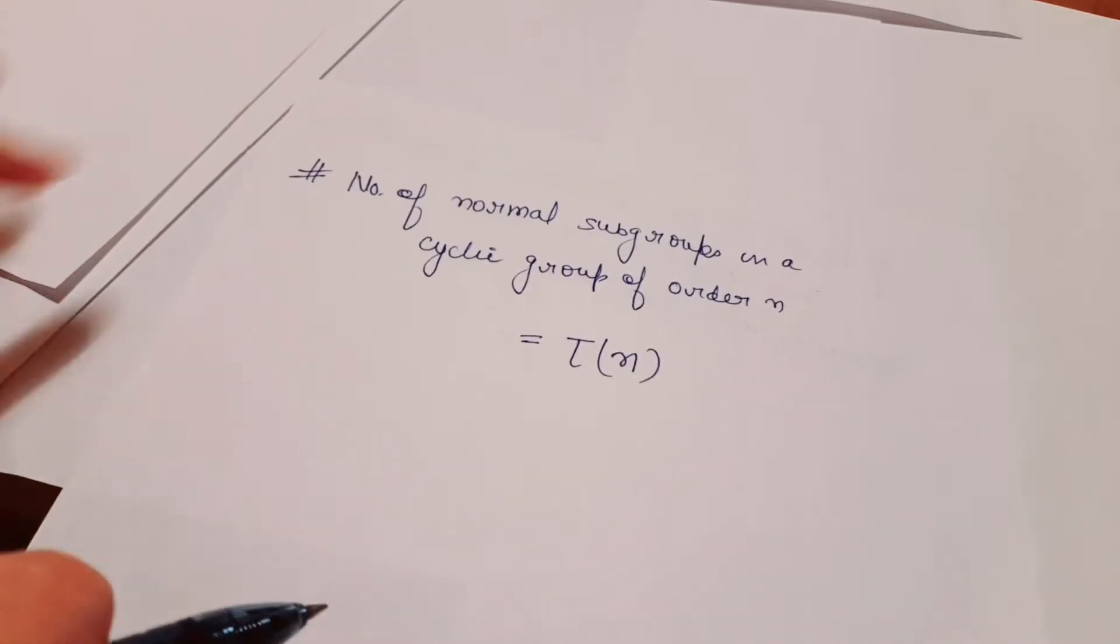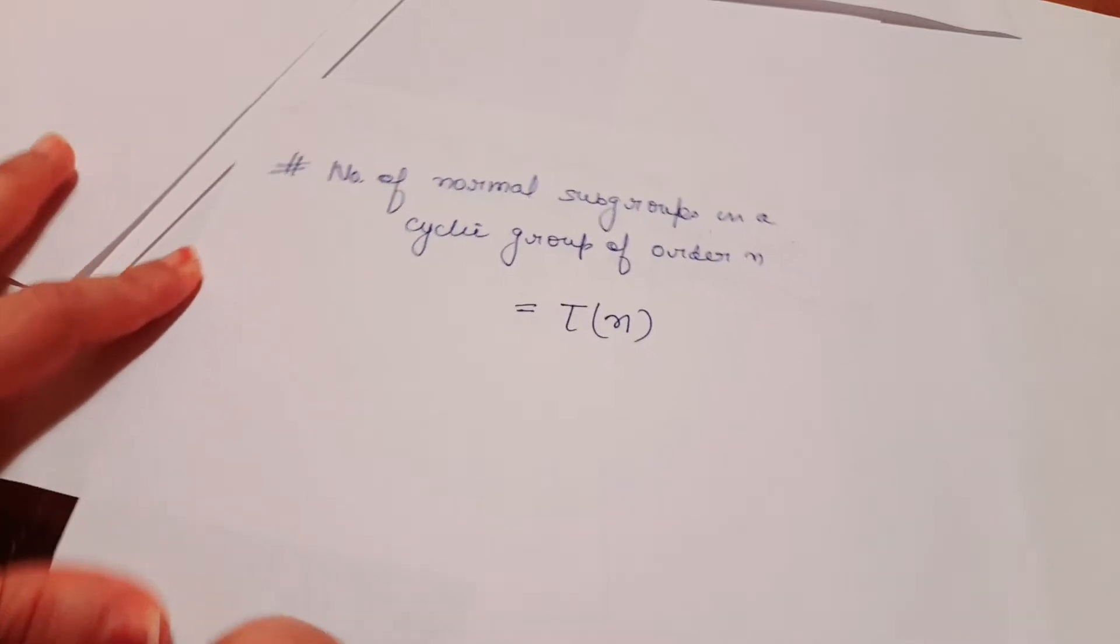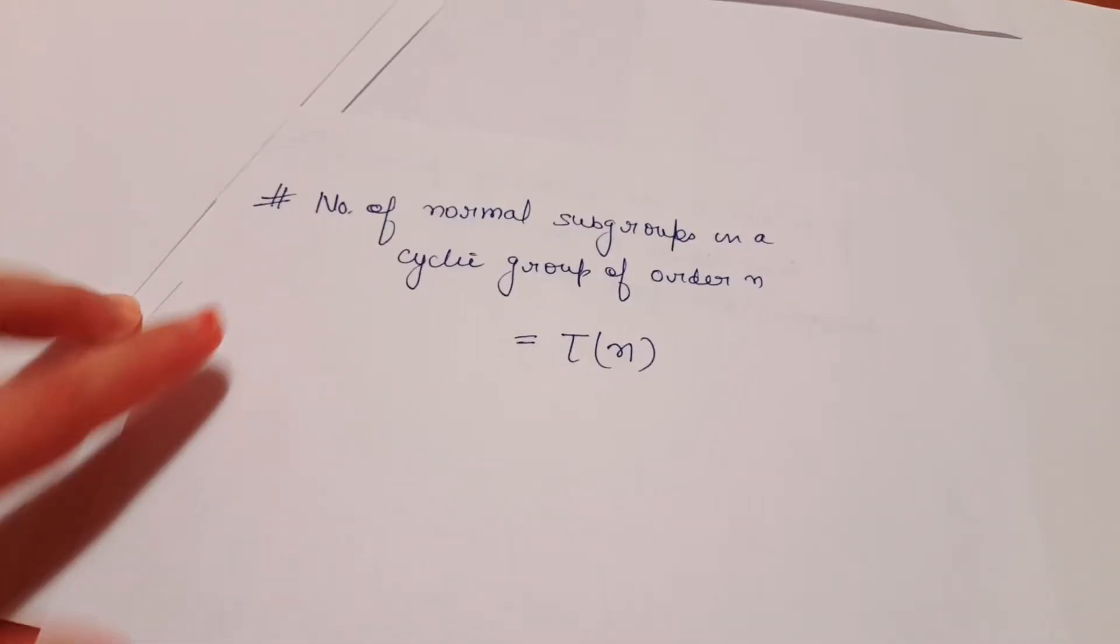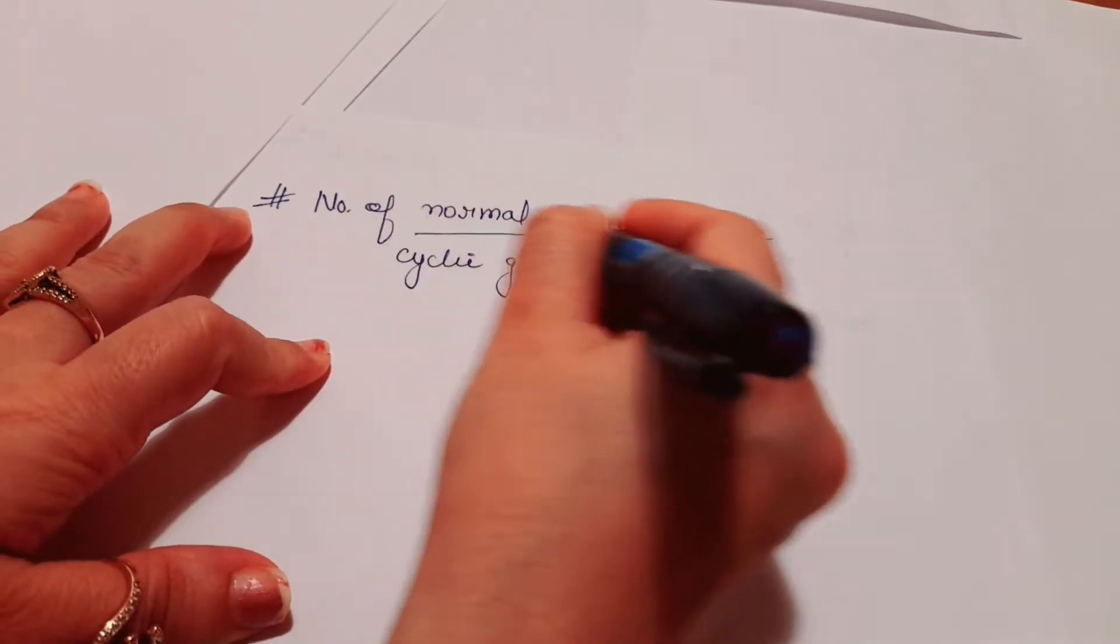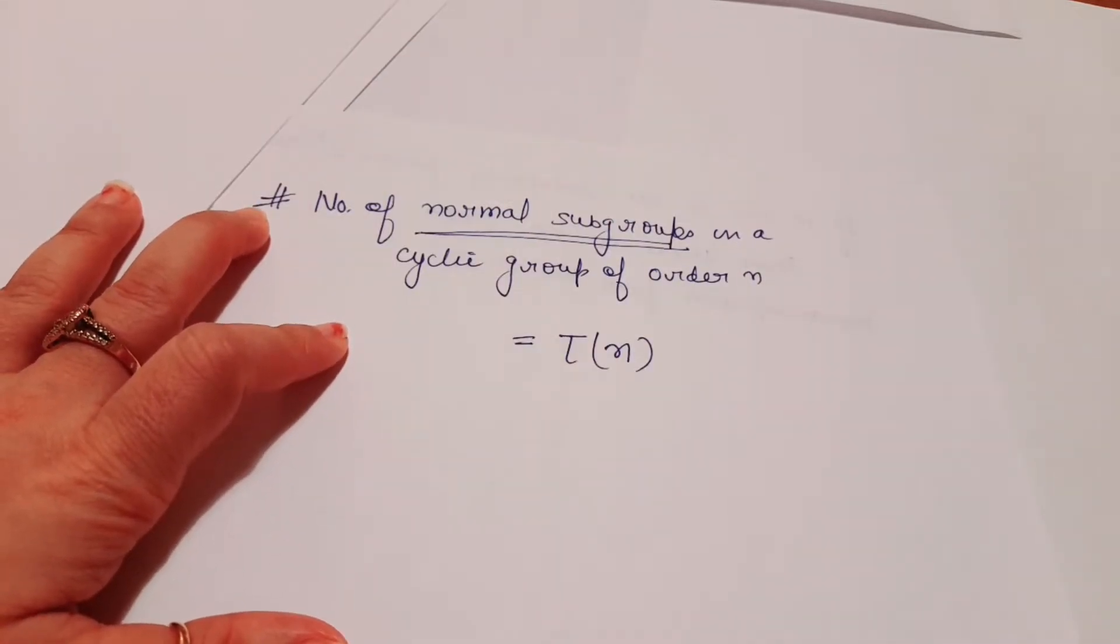This short trick says that the number of normal subgroups in a cyclic group of order n is tau n. What are normal subgroups? You can see in my videos. Here we are doing only short tricks.